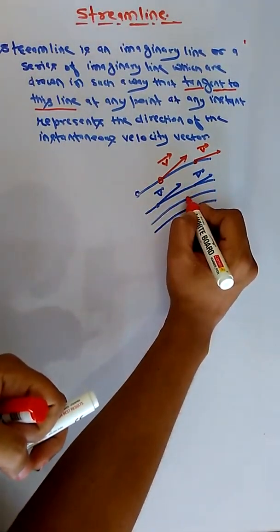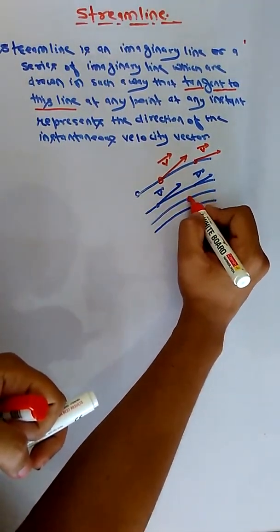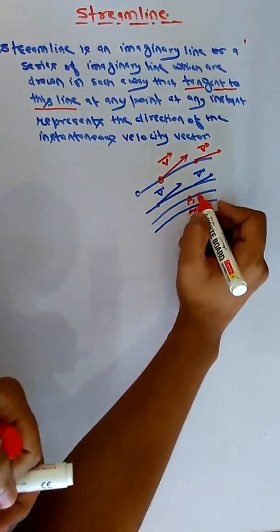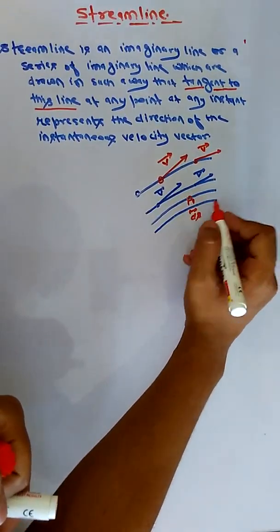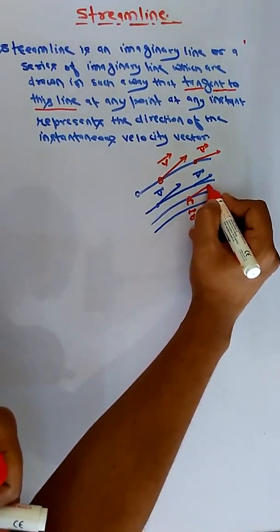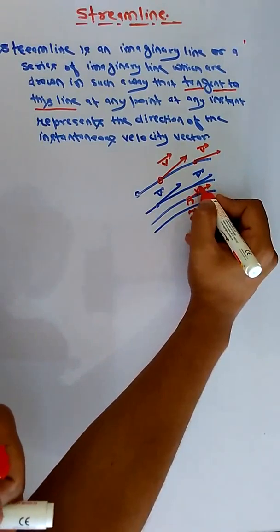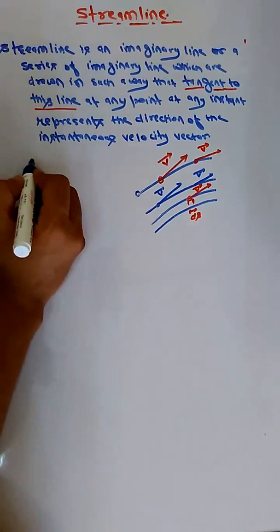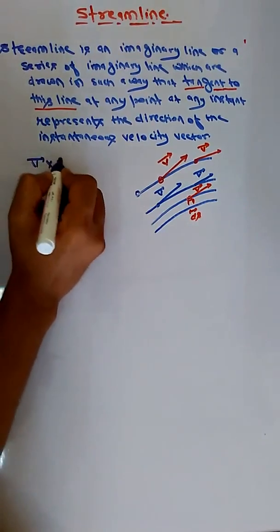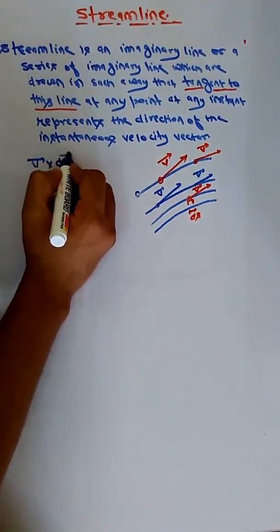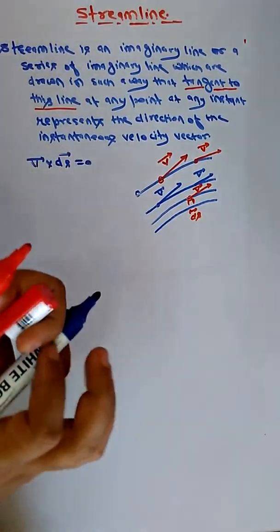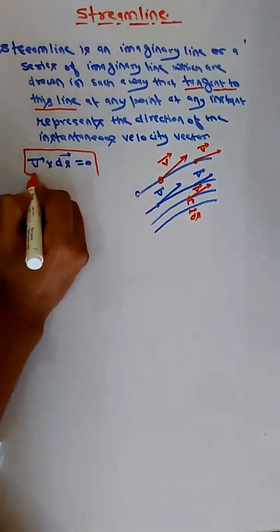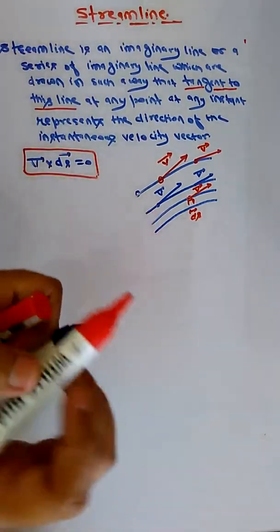The characteristic equation of the streamline: suppose this is your fluid particle having length ds — ds is the length of the fluid particle and this represents the direction of the velocity vector. The characteristic equation of a streamline is V⃗ × ds⃗ = 0. This is the representation and equation of a streamline.